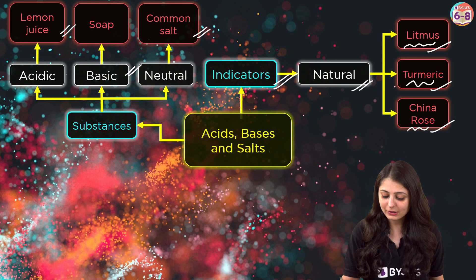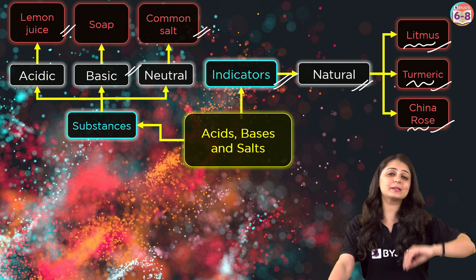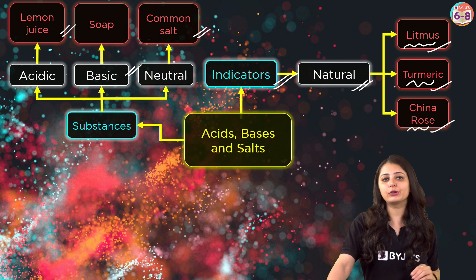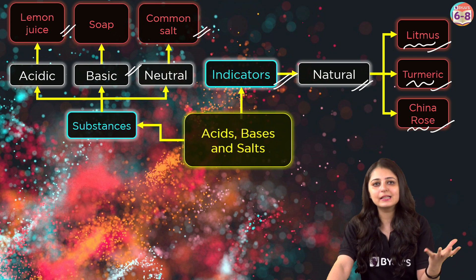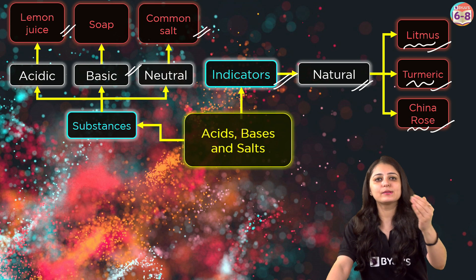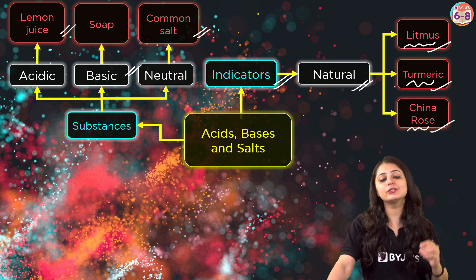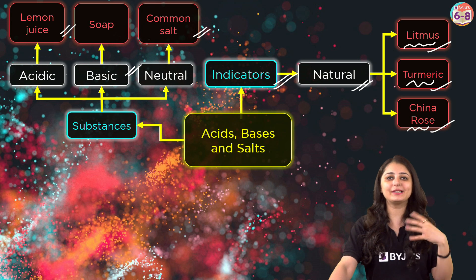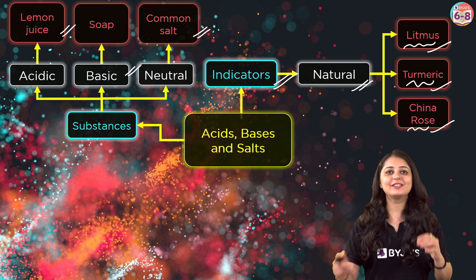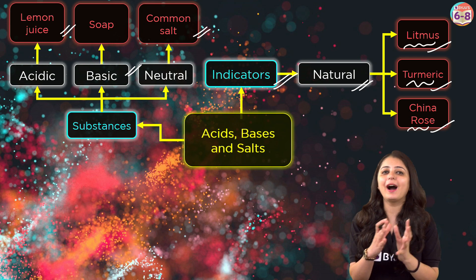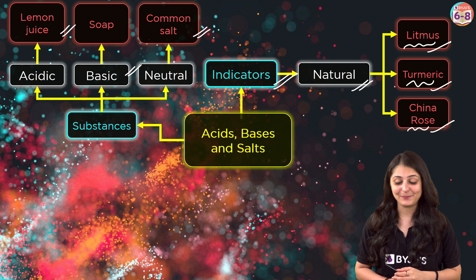Finally, we have china rose. China rose petals are kept in warm water and a colored solution is obtained. This colored solution is used as an indicator to test other substances. It changes to dark pink in acidic medium and green in basic medium.